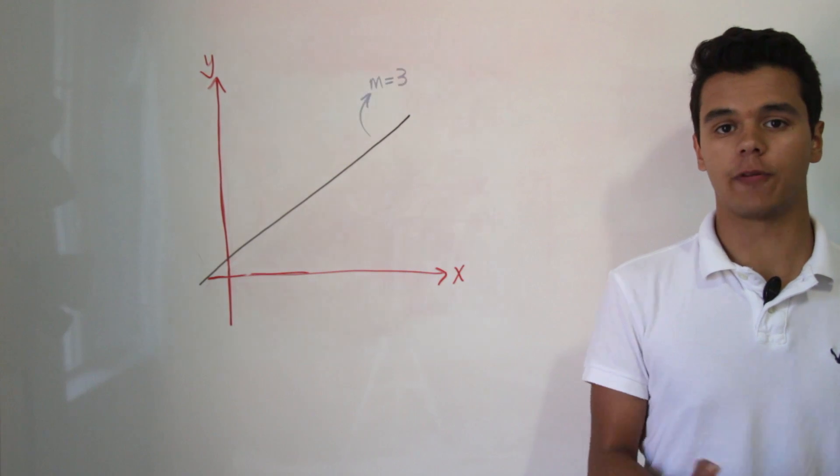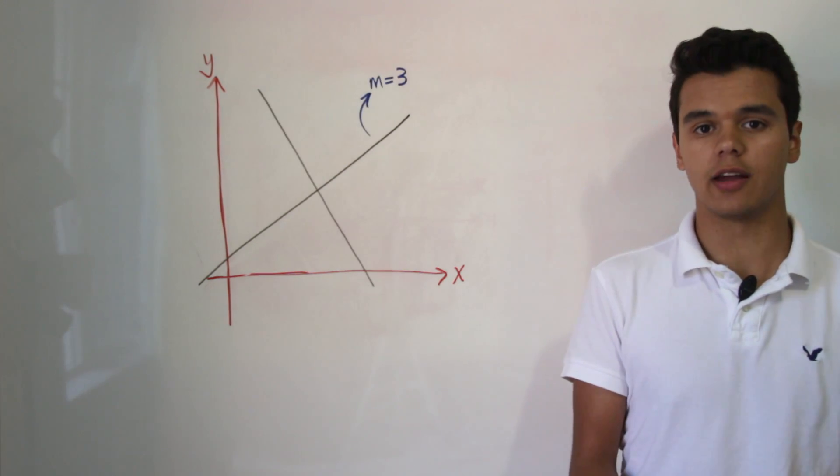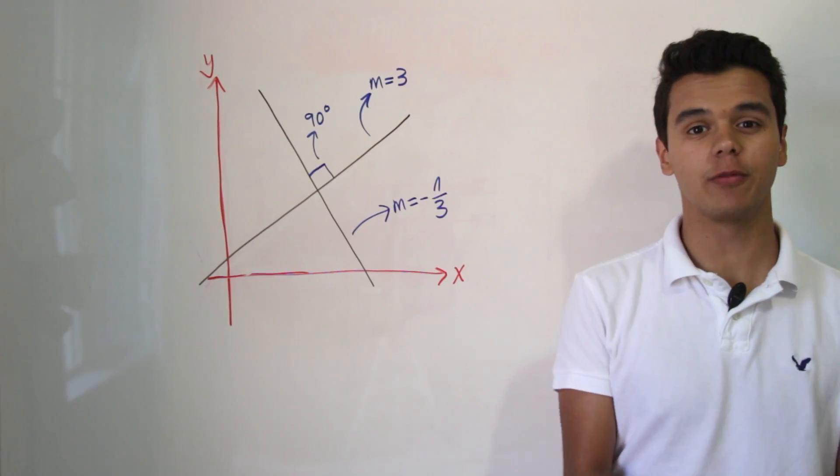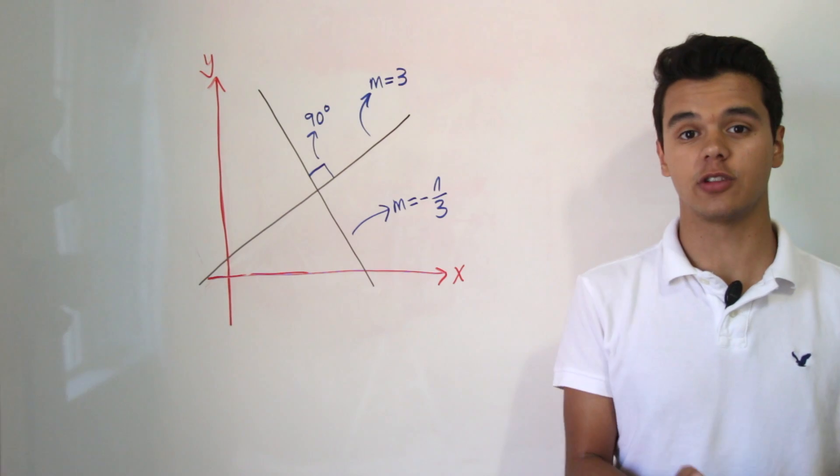So we have a straight line that has a slope of 3 and there's a second straight line that meets it in a 90 degree angle and has a slope of negative 1 over 3. Believe me, they're perpendicular to each other and their slopes are right.